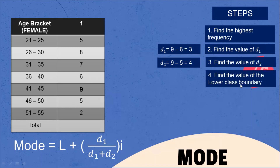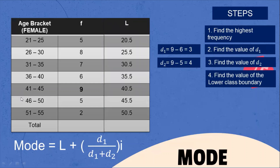Next, find the lower class boundary. We take the lower class limit for each class and subtract 0.5. So: 21 − 0.5 = 20.5, 26 − 0.5 = 25.5, 31 − 0.5 = 30.5, 36 − 0.5 = 35.5, 41 − 0.5 = 40.5, 46 − 0.5 = 45.5, 51 − 0.5 = 50.5. The lower class boundary of the highest frequency (9) is 40.5.